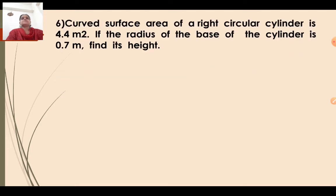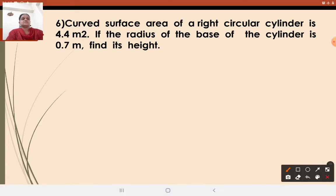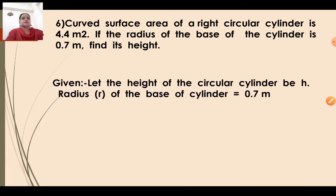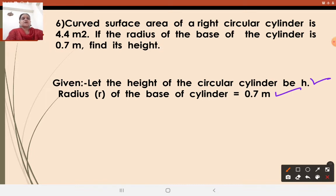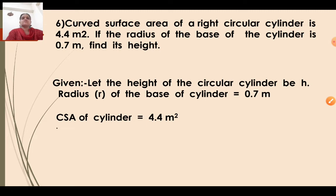Question number 6: Curved surface area of a right circular cylinder is 4.4 meter square. If the radius of the base of the cylinder is 0.7 meter, find the height. So what is given? The curved surface area is 4.4 meter square and the radius is 0.7 meter. We will consider height as H and apply the same formula.